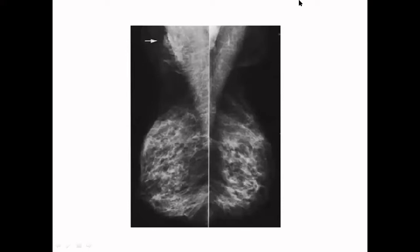An accessory breast tissue can be seen in the axilla — it looks very similar to breast parenchyma. This is the commonest location of accessory breast tissue, which is why we image the axilla either for accessory breast tissue or for lymph nodes.